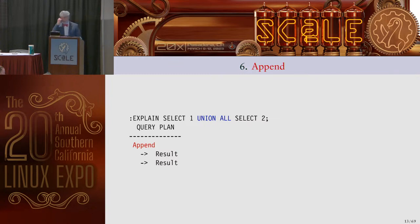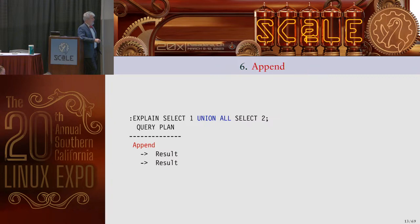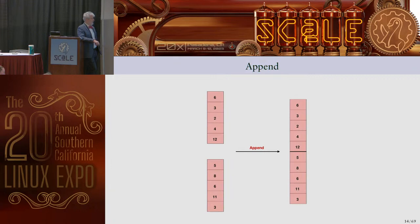Append: UNION ALL does not remove duplicates. I have SELECT 1 UNION ALL SELECT 2, and append does exactly what it says — it puts one result on the end of the other, just appends it. We've got two result nodes combined and appended together in any order.